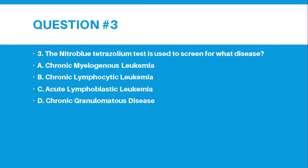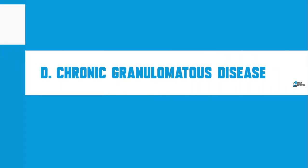Number 3: The nitro blue tetrazolium test is used to screen for what disease? Letter A, Chronic Myelogenous Leukemia. Letter B, Chronic Lymphocytic Leukemia. Letter C, Acute Lymphoblastic Leukemia. Letter D, Chronic Granulomatous Disease. The answer for number 3 is Letter D, Chronic Granulomatous Disease or CGD.